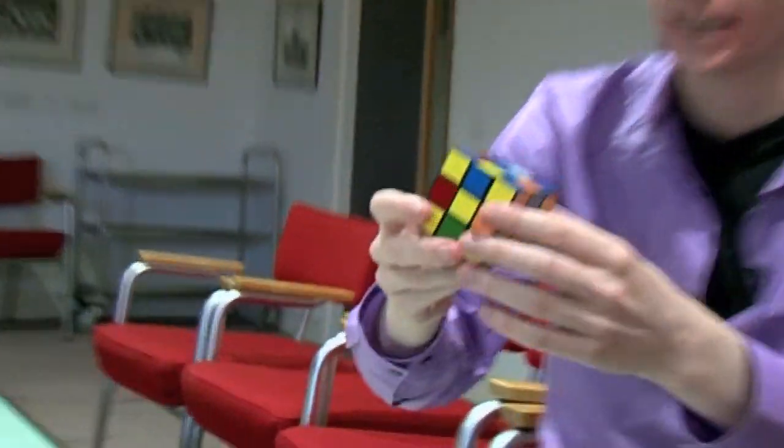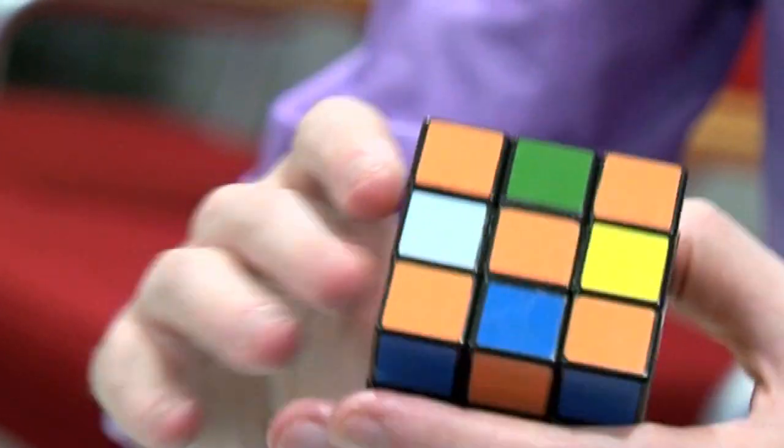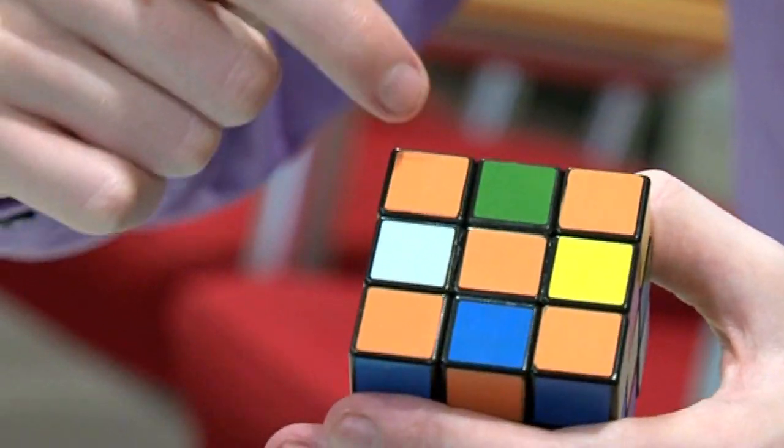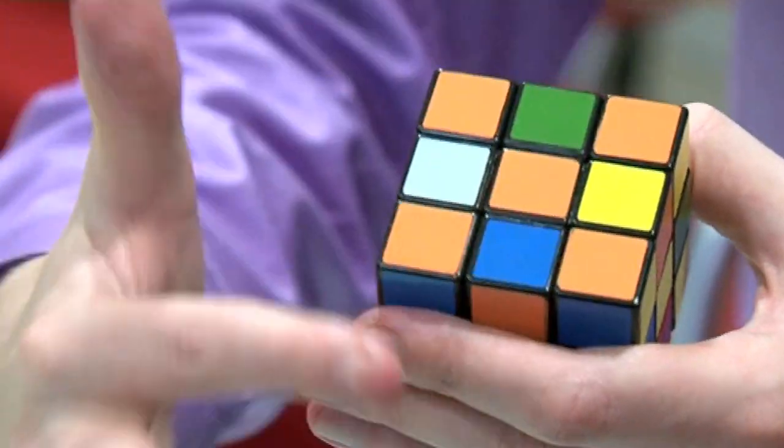Now if you look at it, what's happened is all the corners are perfectly fine. See, this is the orange face. All the orange corners in the center are just fine. This is the orange face.